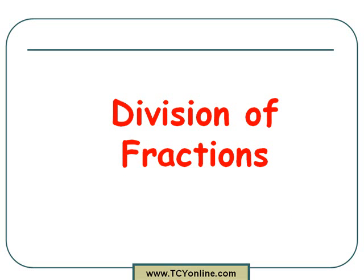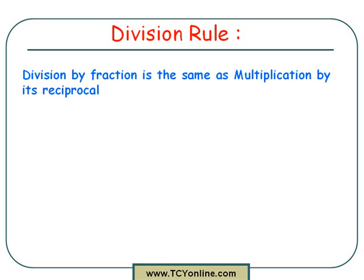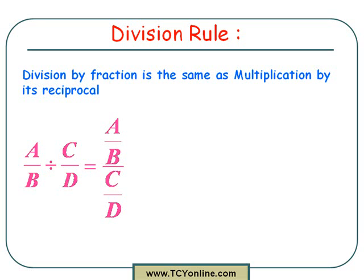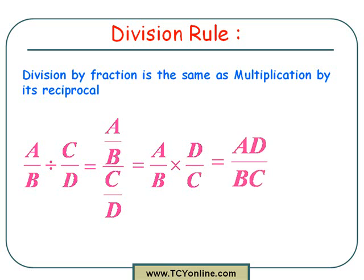Now let's learn how to divide fractions. Similarly, let's learn about the division rule. Dividing by a fraction is the same as multiplying by its reciprocal. For example, if we have fractions a over b and c over d and divide them, then a over b divided by c over d can be rewritten by inverting the denominator fraction c over d to its reciprocal and changing the division sign to multiplication. So this becomes a over b times d over c. Now simply multiply: a times d gives ad, and b times c gives bc. So our answer is ad over bc.